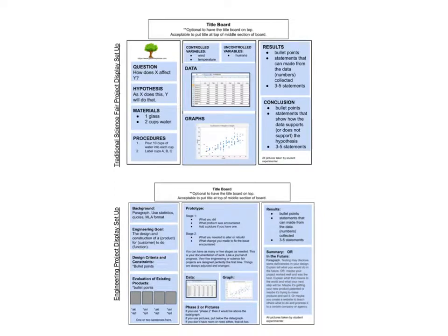The first thing to remember when creating your display board is that if you have a traditional science fair project with an experiment portion, you're going to have one type of display. You want your display to go in the process of the scientific method, which means we read the first column top to bottom, then the second column top to bottom, and then the last column on your display board top to bottom. Your project should display the scientific method in its proper order.